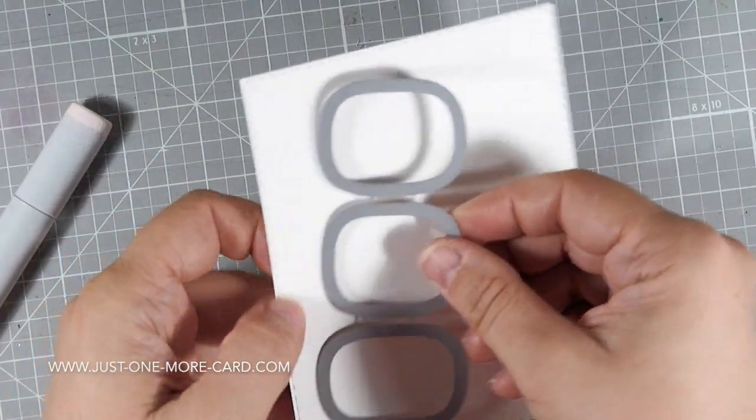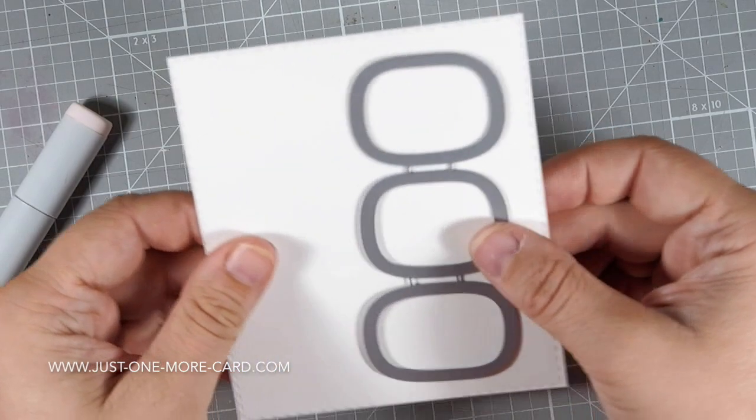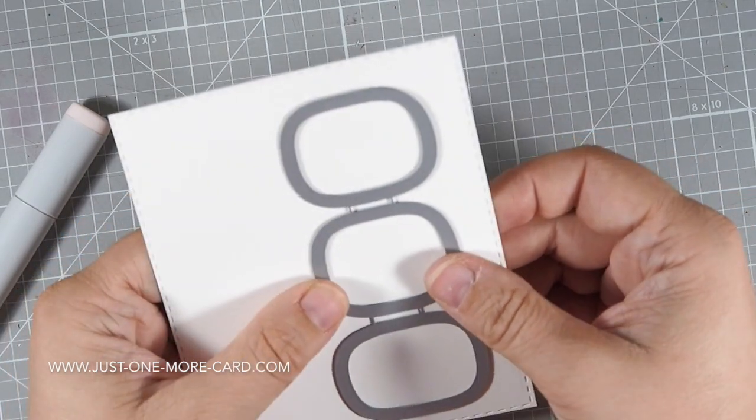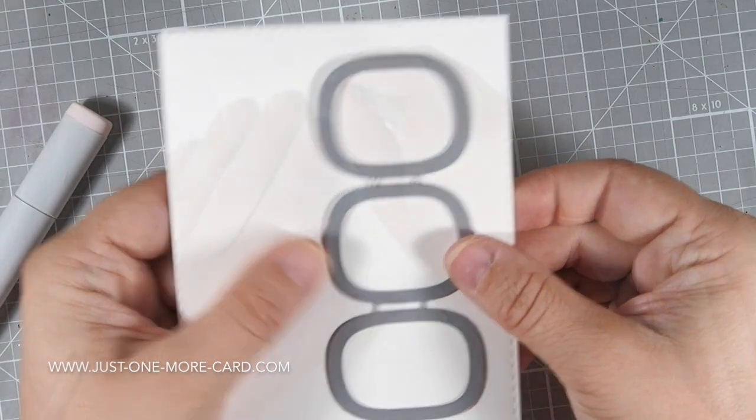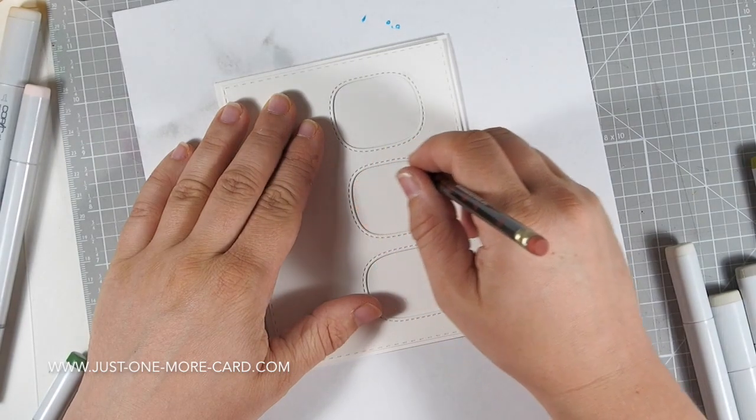Now this is a die by My Favorite Things and you can clip these apart so you have three separate dies. But I wanted to keep them together because I feel that it's great to create window cards or maybe even shaker cards and not have to worry about the spacing. So that's why I left them together.